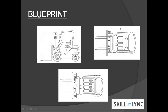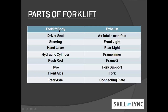The blueprint obtained from a Google site was the base reference for creating the forklift. From this blueprint, 18 parts were identified: the forklift body, seat, steering, hand lever, hydraulic cylinder, push rod, air intake manifold, front light, rear light, and additional components. All these parts were then modeled in SOLIDWORKS.